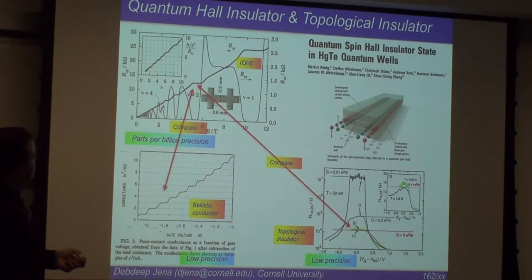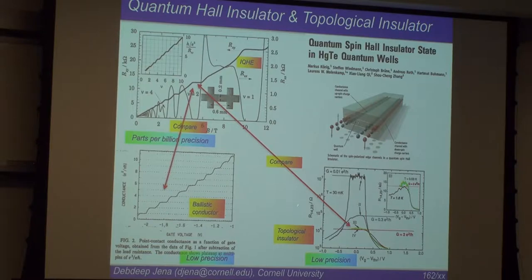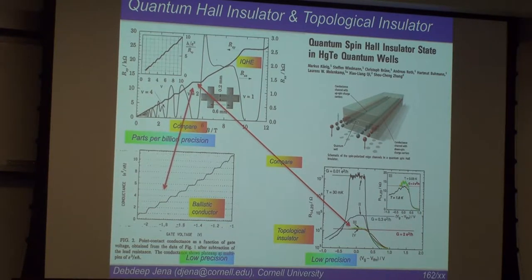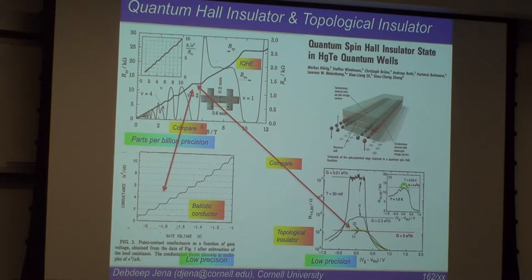There's also the quantum spin Hall effect, where quantization is not extremely precise — somewhat noisier. You can see 2e²/h; it should be very flat but it's not quite. The quantum Hall effect achieves parts-per-billion precision in the conductance quantization, whereas traditional quantized conductance in 1D nanowires or quantum spin Hall systems is much lower precision by comparison.